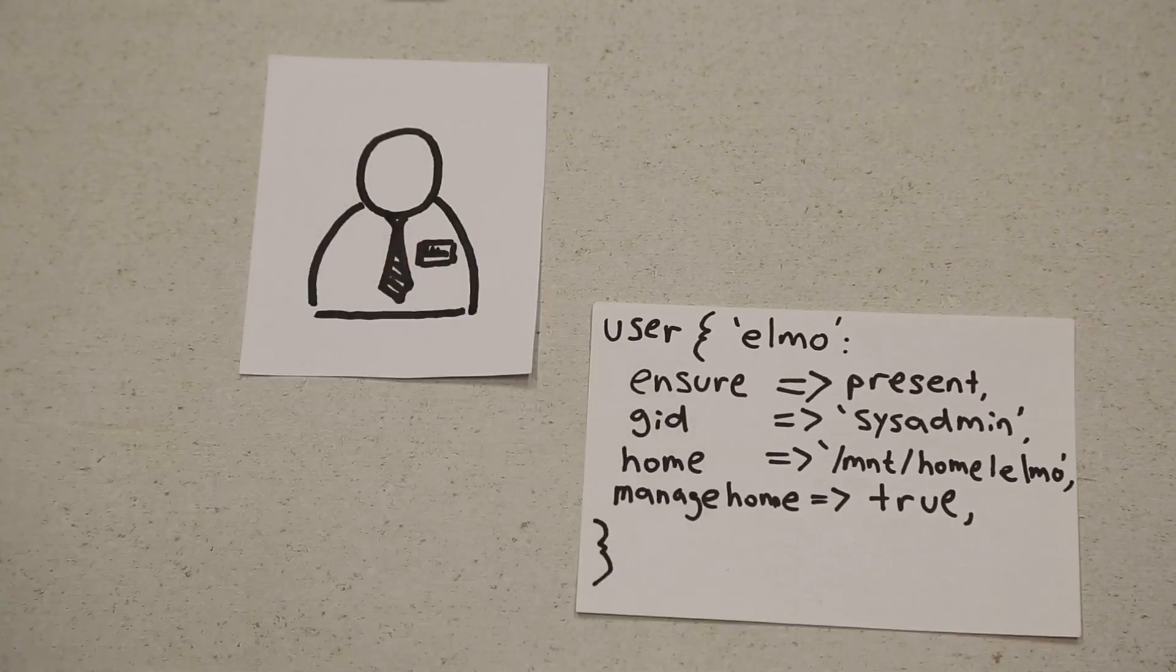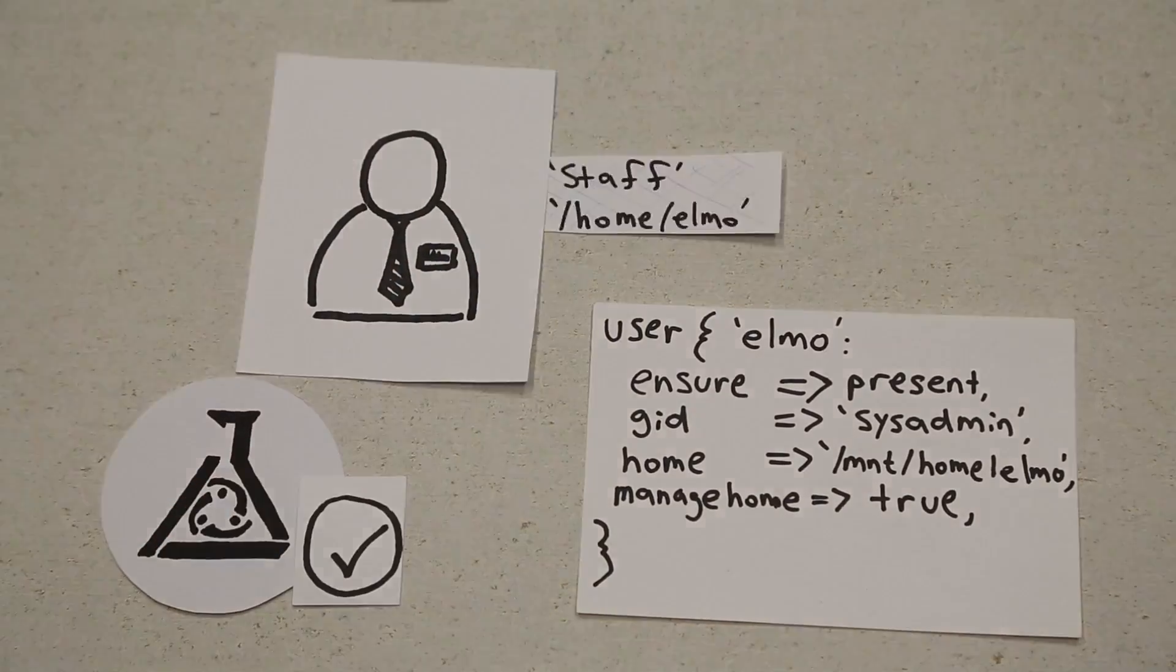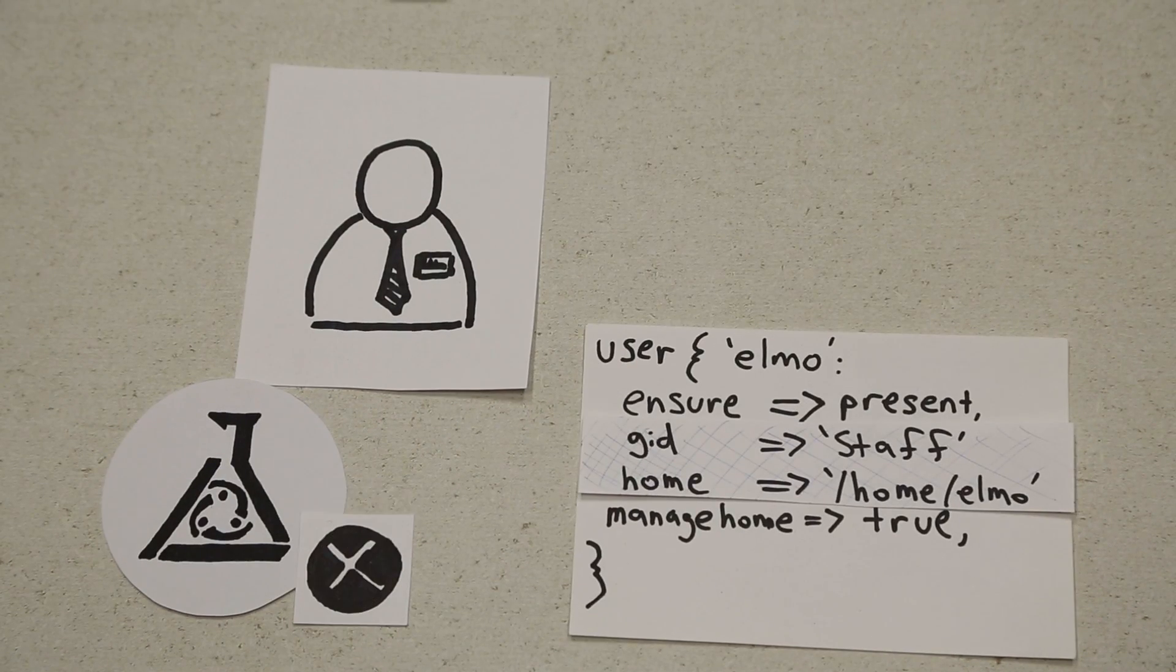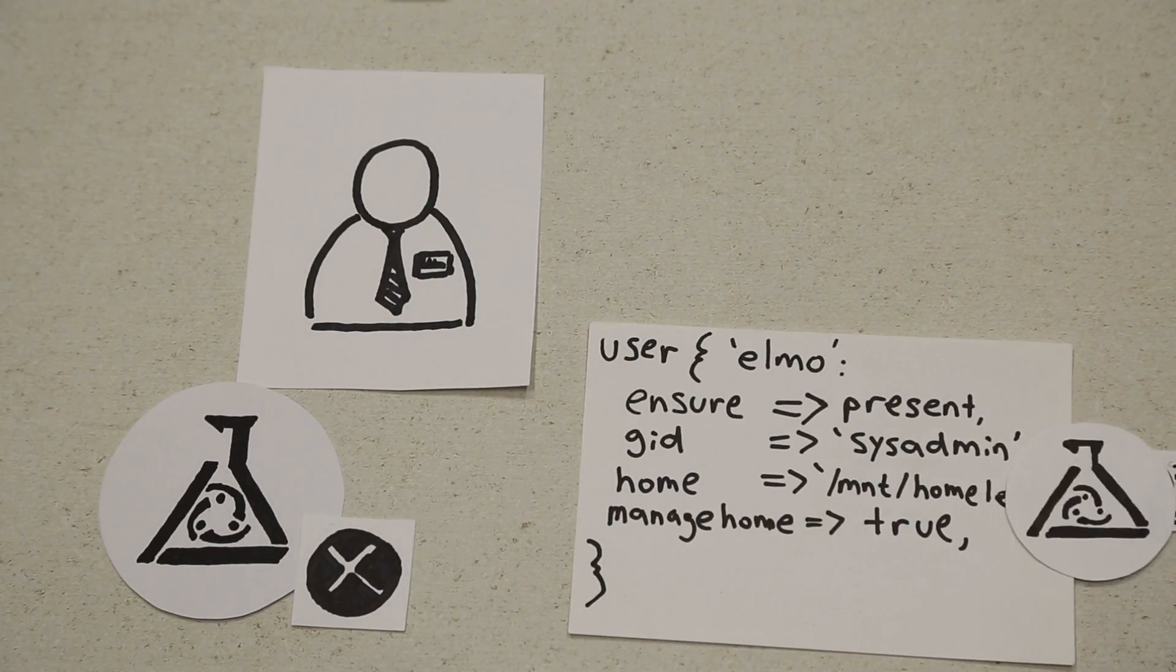Joe can define the intended state of any node, and Puppet Enterprise will remediate the settings to the desired state whenever there is any deviation.